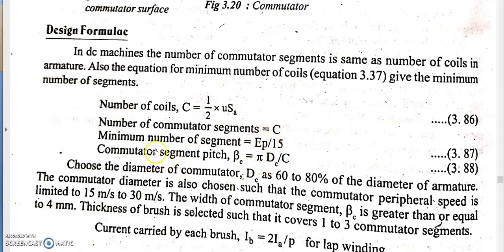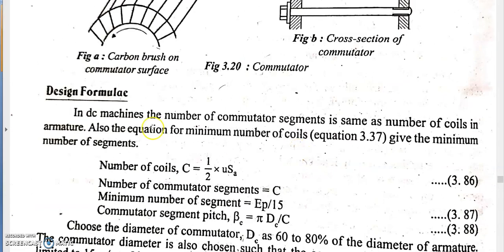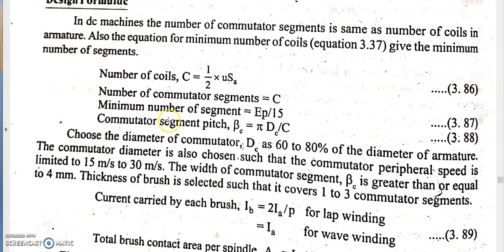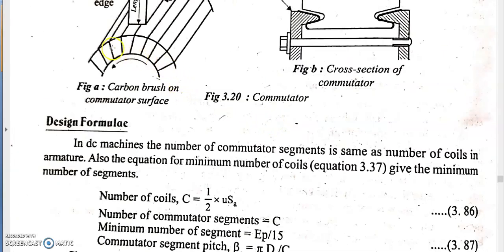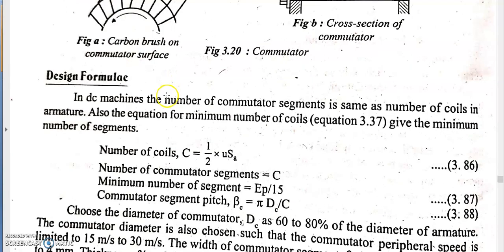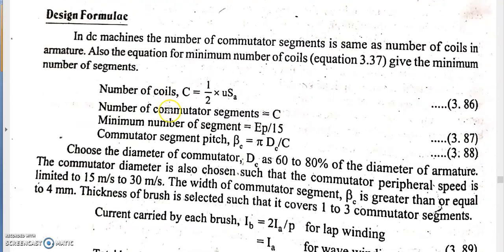The minimum number of commutator segments must be EP/15. A larger number of commutator segments is advisable so that the voltage between adjacent segments is lower. However, there is a minimum limit. If this minimum is not maintained, the amount of spark produced will be more. To improve the commutation process and achieve sparkless commutation, the minimum number of commutator segments must be maintained as EP/15.